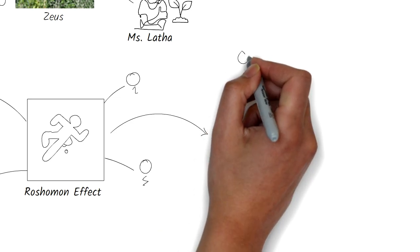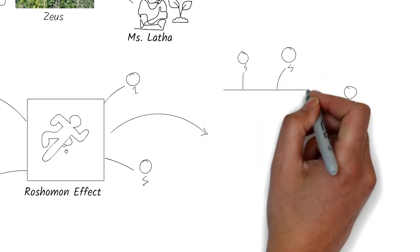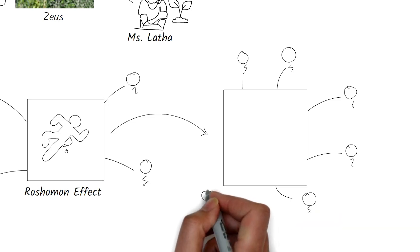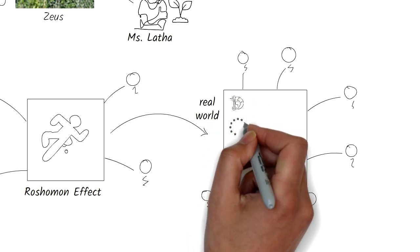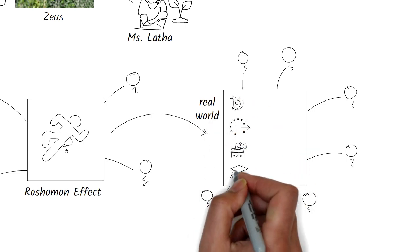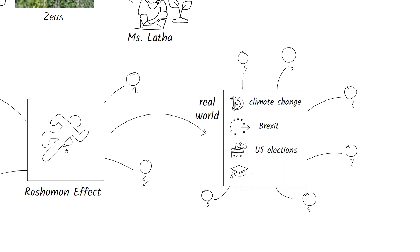The term Rashomon Effect has since transcended cinema to describe real-world situations in which we get conflicting interpretations about a single event, and that highlights the subjective nature of human perception and memory. Try asking a few people about climate change, Brexit, U.S. elections, or the educational system. You won't find one right answer.